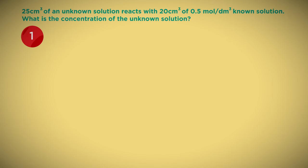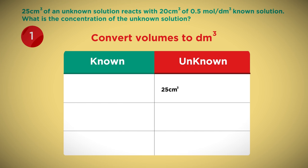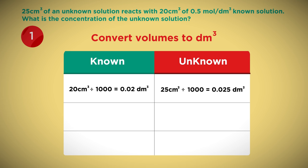First, we need to convert volumes to cubic decimeters. We do this by dividing by 1,000. So 25 cubic centimeters divided by 1,000 equals 0.025 cubic decimeters, and 20 cubic centimeters divided by 1,000 equals 0.02 cubic decimeters.